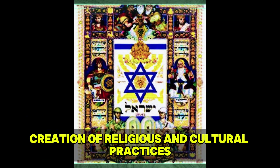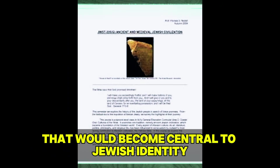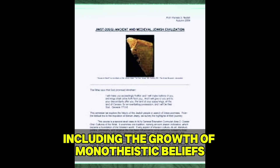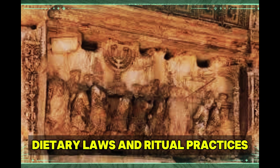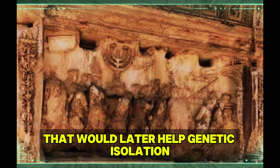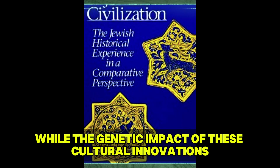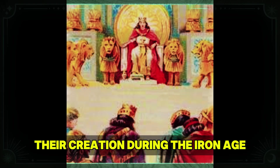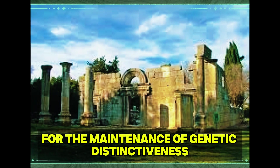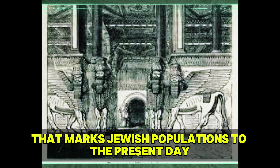This period also saw the creation of religious and cultural practices that would become central to Jewish identity, including the growth of monotheistic beliefs, dietary laws, and ritual practices that would later help genetic isolation through endogamous marriage patterns. While the genetic impact of these cultural innovations would not become fully clear until later historical periods, their creation during the Iron Age built the framework for the maintenance of genetic distinctiveness that marks Jewish populations to the present day.